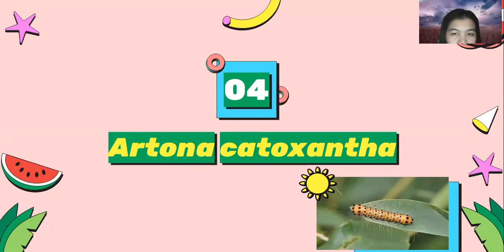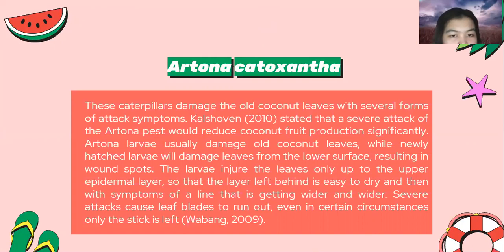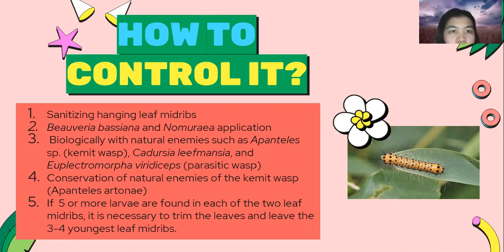The fourth pest is Artona catoxantha. These caterpillars damage old coconut leaves with several forms of attack symptoms. Carl Chauvin in 2010 stated that a severe attack of Artona pest will reduce coconut fruit production significantly. Artona larvae usually damage coconut leaves, while newly hatched larvae damage leaves from the lower surface, resulting in spots. The larvae injure the leaves only up to the upper epidermal layer, so that the layer left behind is easy to dry, with symptoms of a line that is getting wider and wider. Severe attacks cause leaf blades to run out, and in certain circumstances only the midrib is left.